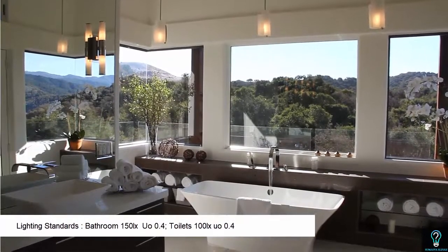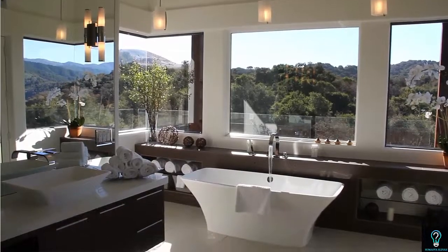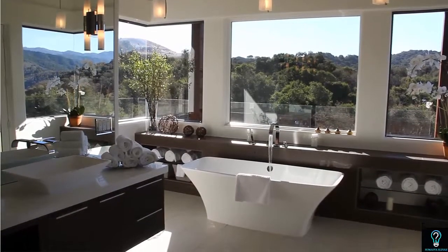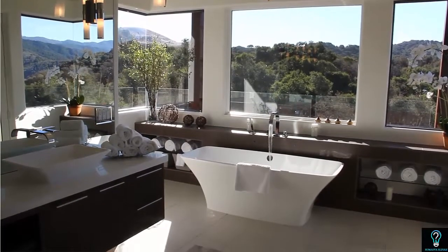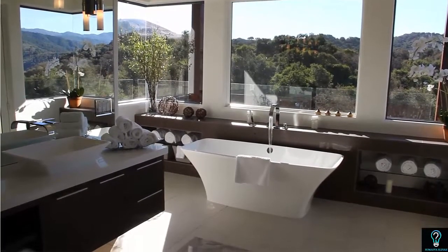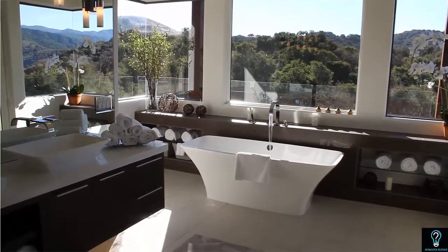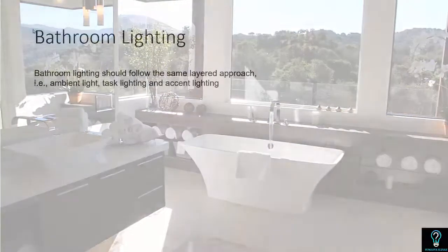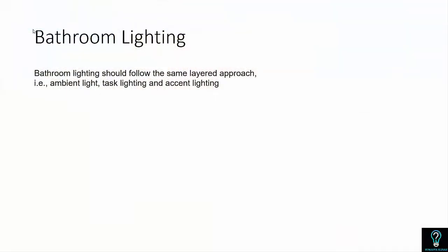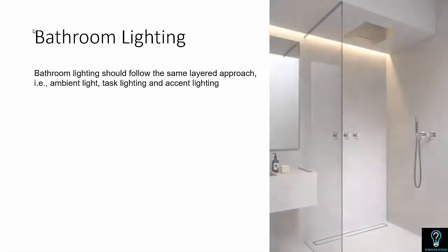As per the lighting standards, we need 150 lux in bathrooms and 100 lux in toilets with a uniformity of 0.4. We are going to discuss the bathroom lighting techniques in detail. Bathroom lighting should follow the same layered approach as we follow in other room settings — that is ambient lighting, task lighting, and accent lighting.